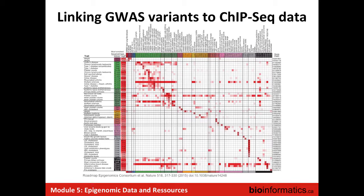By doing systematic profiling of enhancer regions across many cell types, you can see on this axis the various cell types and where the enhancers are in each. For instance, LDL cholesterol GWAS hits were enriched almost only in the liver, which makes sense. There's really an encouraging correspondence between specific GWAS hits and regions that are in open chromatin in the tissue that's relevant.